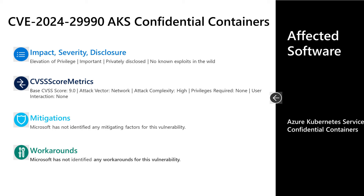Next is CVE-2024-29990, an important elevation of privilege vulnerability in Azure Kubernetes Service confidential containers. This was privately disclosed with no known exploits in the wild. It has a base score of 9.0 — the highest score in today's release. The attack vector is over the network, attack complexity is high, privileges required is none, and user interaction is none. The high attack complexity means successful exploitation requires an attacker to prepare the target environment to improve exploit reliability, and success is not guaranteed every time. Microsoft is not providing exact steps to avoid giving threat actors too much information.